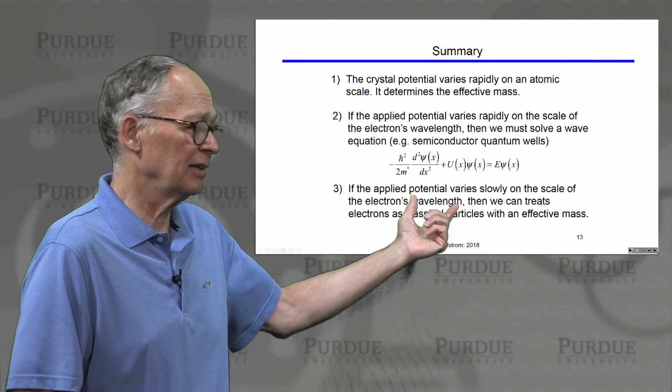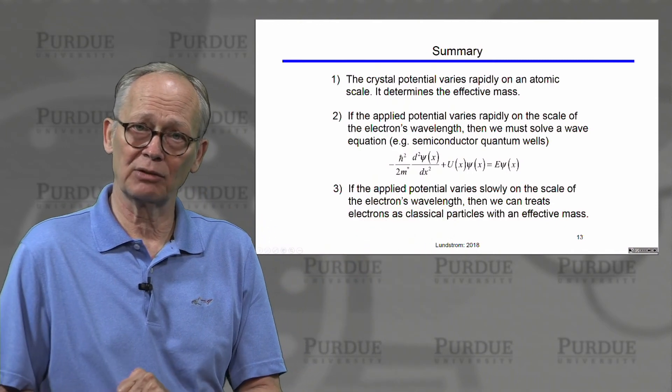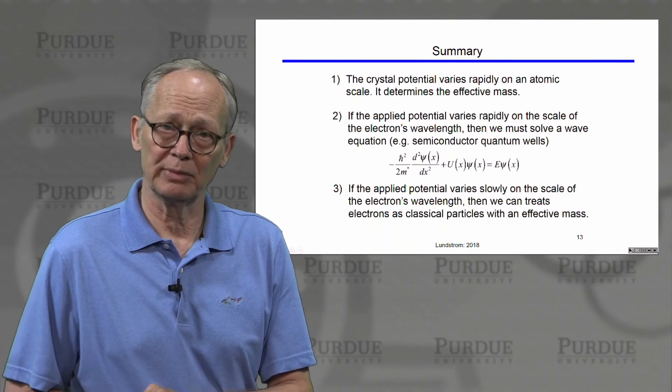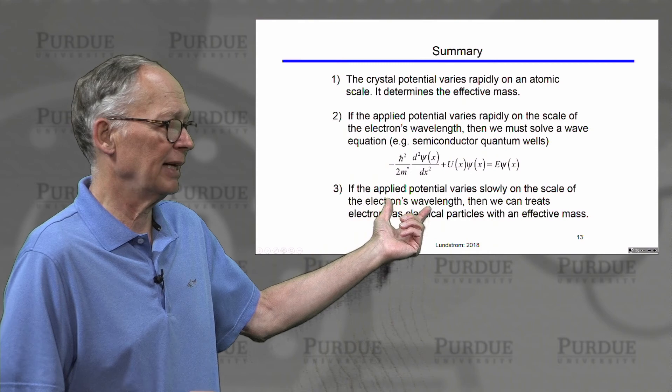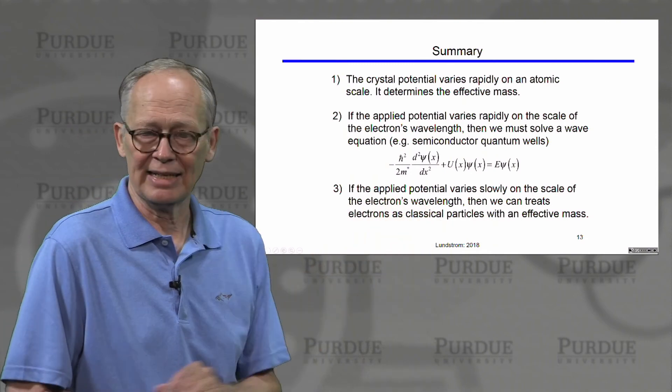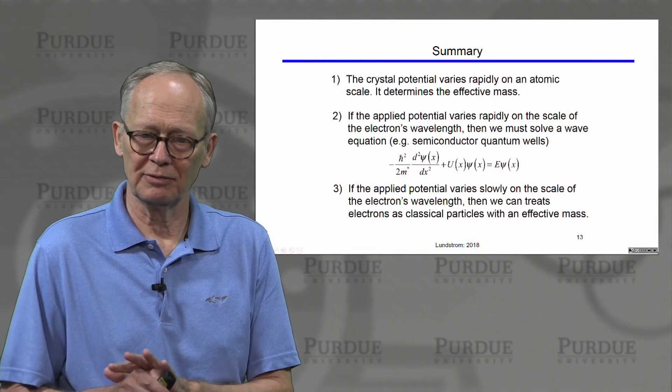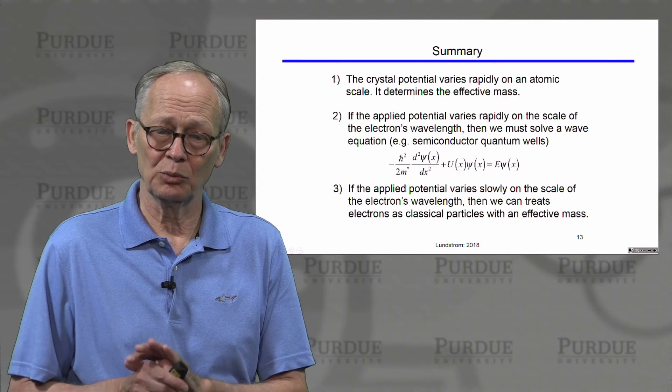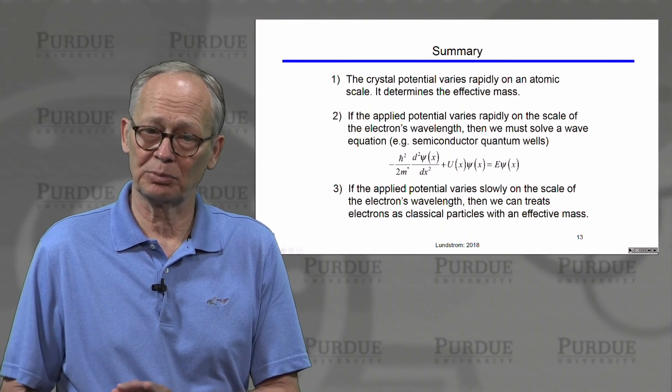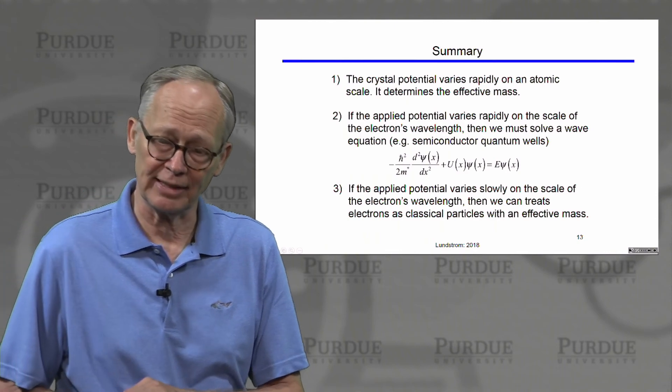If we have potentials in a semiconductor device that vary rapidly on the scale of the electron wavelength, we should expect quantum mechanical reflections. If we want to avoid those quantum mechanical reflections, we would engineer the potential to vary slowly on the scale of the electron wavelengths. Under those conditions then, we can treat the electrons as classical particles with all of the quantum mechanics being embedded in an effective mass.